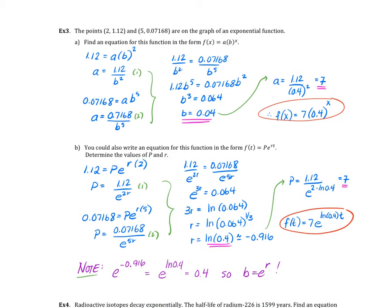Example three. I'm only going to take you through example three part a and part b, then you should do example four on your own and check the notes answer key online. Example three should be pretty intuitive. We give you two points: (2, 1.12) and (5, 0.07168) are on the graph of an exponential function. We're asking you to get the equation of this exponential function. Obviously you have your x coordinate and y coordinate, so you just substitute into your x and y value.